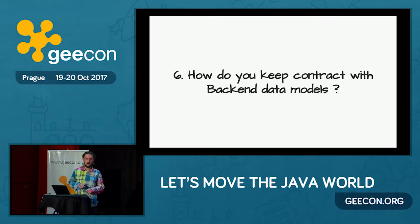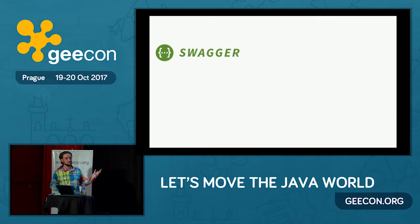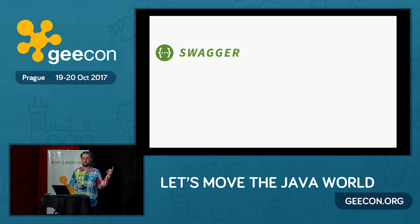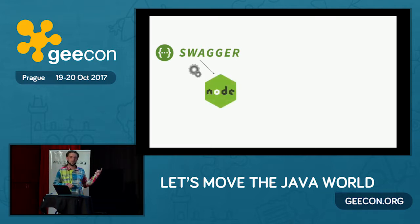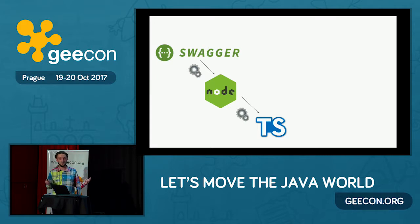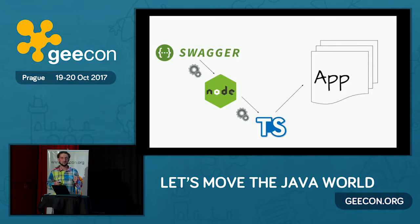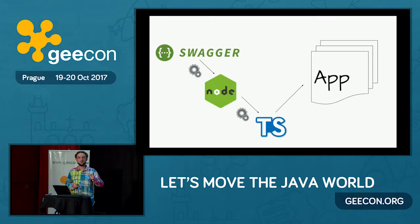How do we keep contracts with back-end data models? We have a source of truth called Swagger. We have Node.js tools that can consume that Swagger file and emit TypeScript definitions — the whole schemas — which are used within our app. So if someone on the back-end changes a model, we get immediate feedback that something changed because the TypeScript won't compile, which is pretty awesome. And now we can blame the back-end developers.